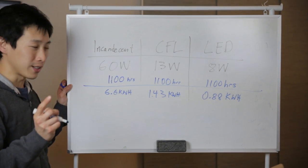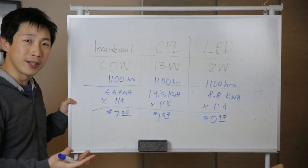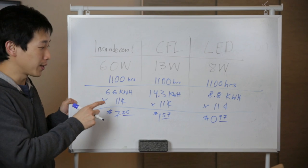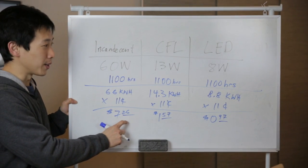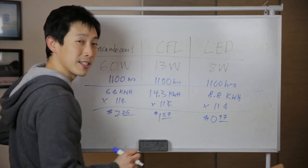Each single kilowatt hour costs 11 cents, so we just multiply all of these by 11 cents. Now we can see that if we run the incandescent light bulbs 3 hours a day, every single day for the year, we would consume about $7.26 worth of electricity. Same thing for the CFL, $1.57, and LED, 97 cents.